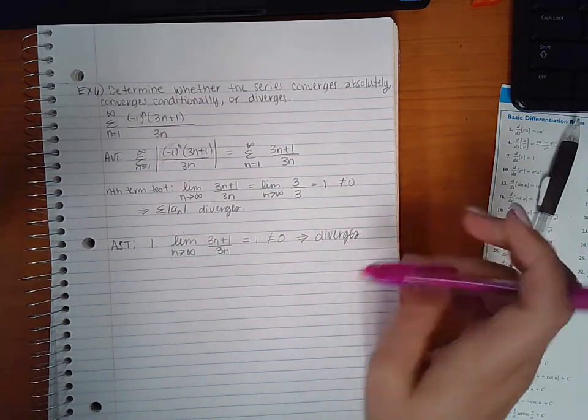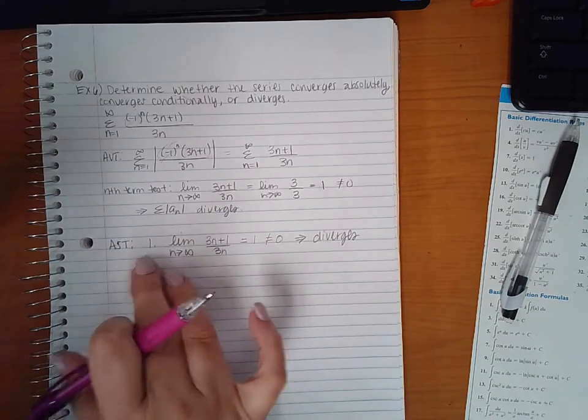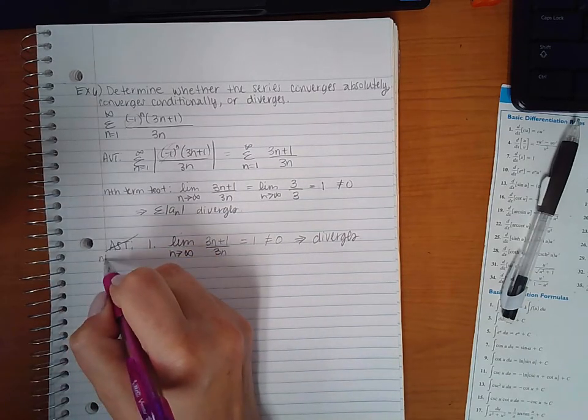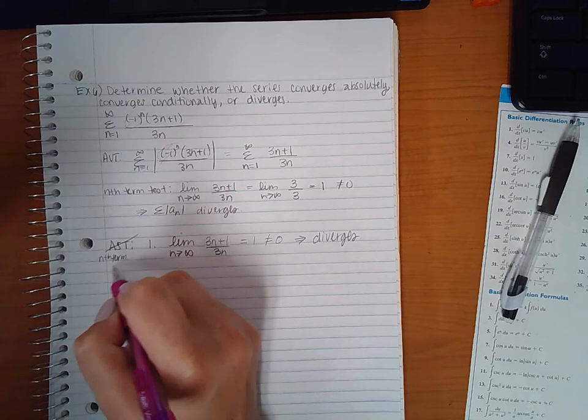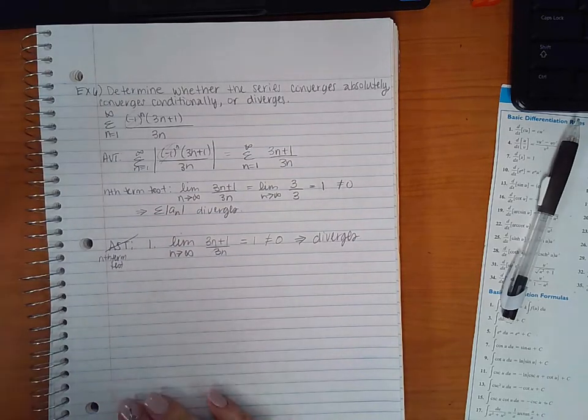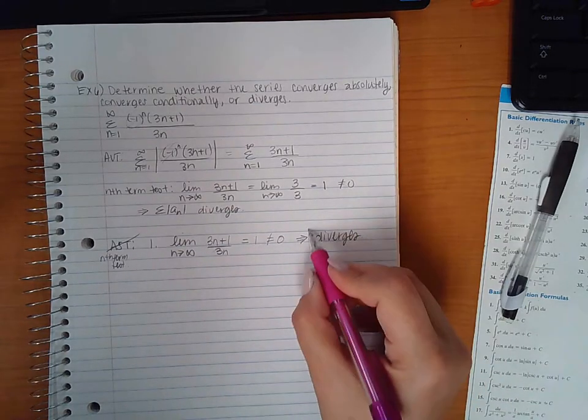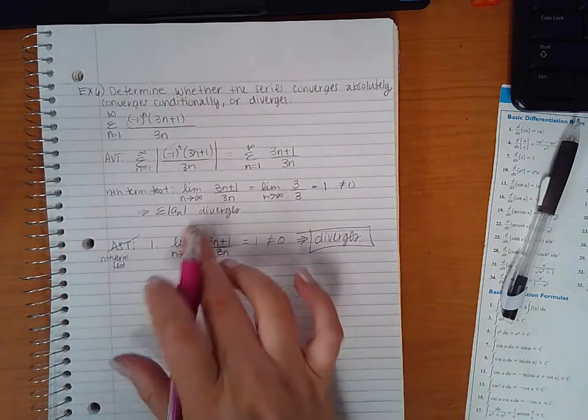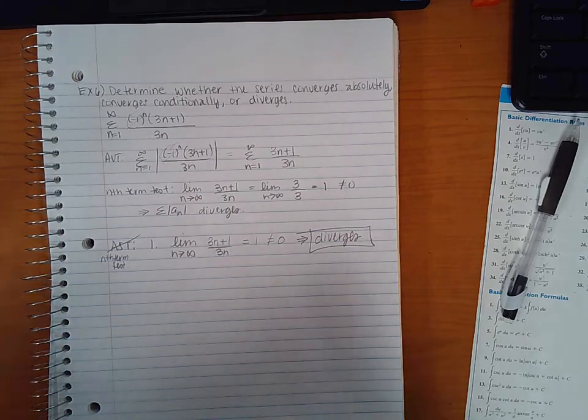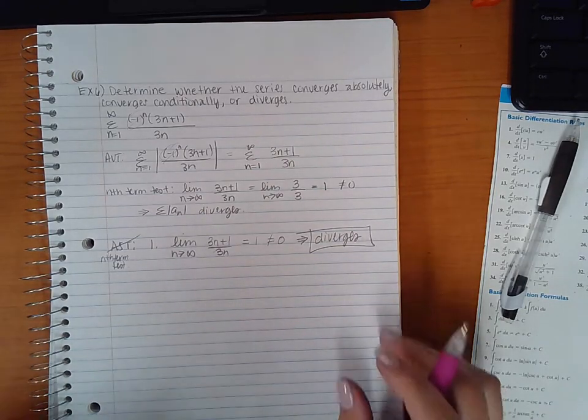So I was going to apply the absolute value test, but it kind of turned into the nth term test. And so then we know that it diverges. So our series diverges. And so does the absolute value. So altogether, everything is just divergent completely.